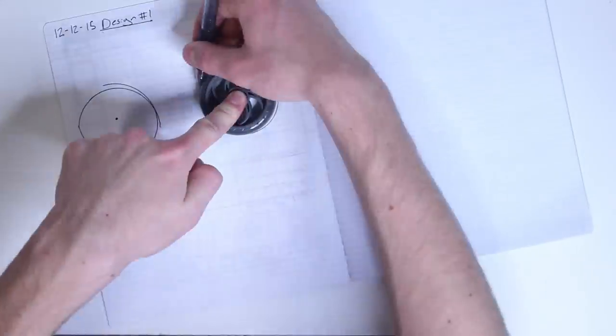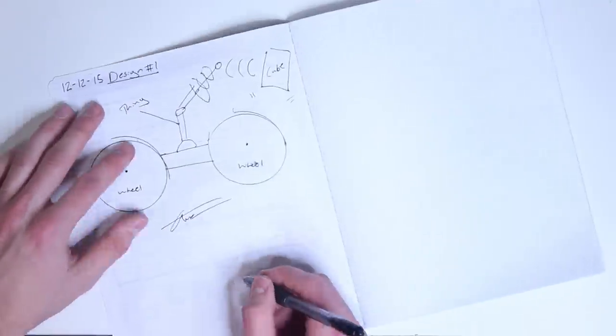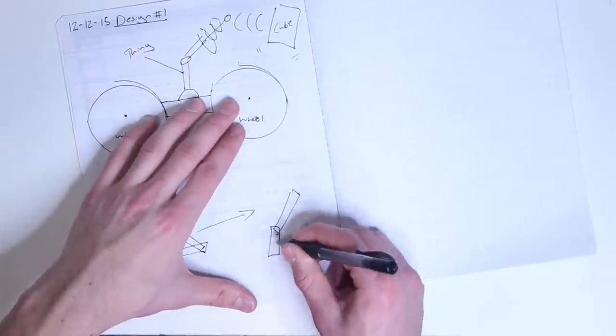Even if your team doesn't have a future architect, don't be afraid to draw up as many designs as you can. By committing your abstract ideas to paper, you have evidence to show how much work your team has put into producing a well-thought-out robot.